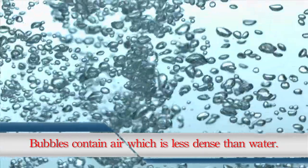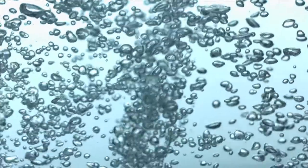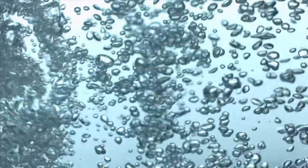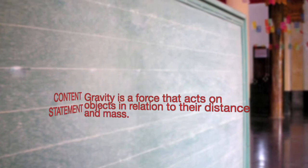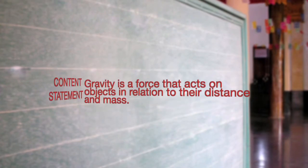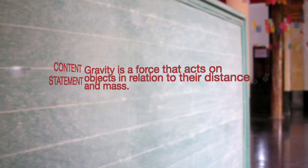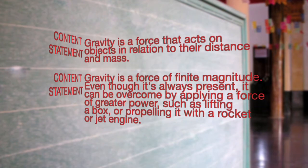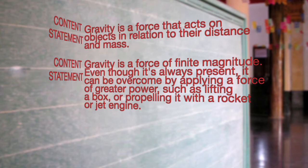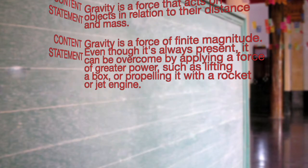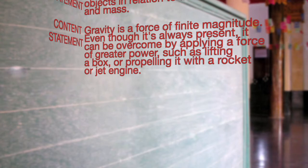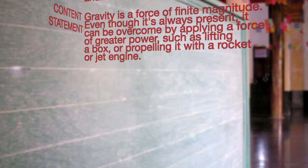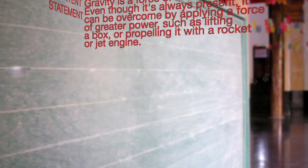Now that you understand different ways to overcome the force of gravity, let's take a look at a few content statements. Gravity is a force that acts on objects in relation to their distance and mass. Gravity is a force of finite magnitude. Even though it's always present, it can be overcome by applying a force of greater power, such as lifting a box or propelling it with a rocket or jet engine. Buoyancy is a force exerted on an object immersed in a fluid or gas.